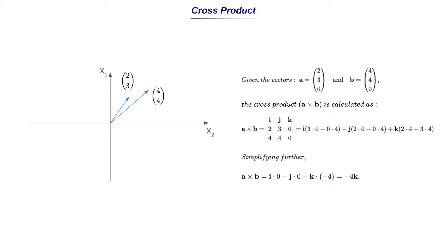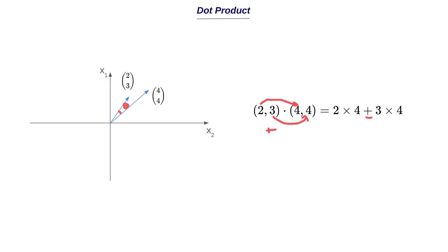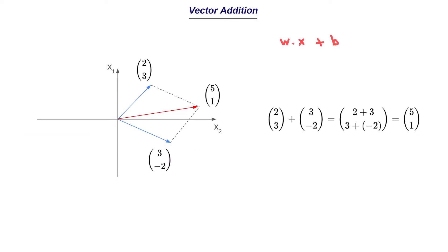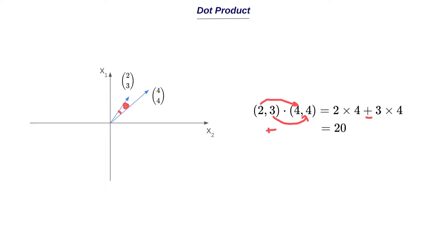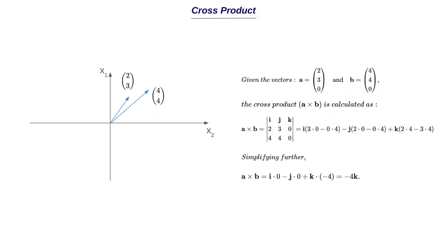To summarize: vector addition and vector subtraction are element-wise operations producing a resultant vector, used in adding a bias vector to the weighted sum. Dot product of two vectors gives a scalar, used in the weighted sum computation. Cross product gives a perpendicular vector. In the next video, we'll try executing vector addition, subtraction, dot product, and cross product in Python for a clearer understanding, then move on to other vector operations and matrices, which are very important in deep learning. Thanks for watching.